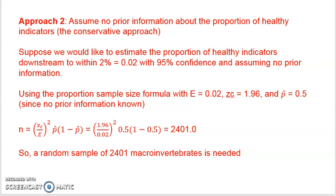Suppose we'd like to estimate the proportion of healthy indicators that are downstream within a margin of error of 2%. And for the margin of error, recall what you've got to do is write it as a decimal. So we're going to use 0.02 for 2%. We want to estimate that proportion with 95% confidence and assume no prior information.